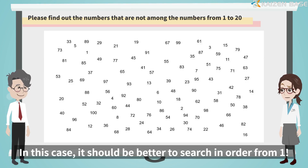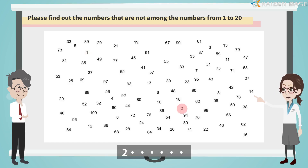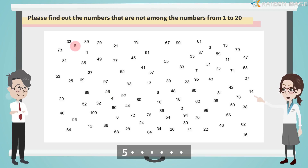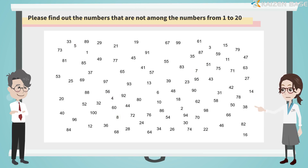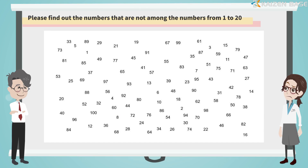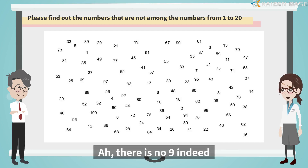In this case, it should be better to search in order from 1. 1, 2, 3 — there is no 4. Ah, there it is. 5, 6, 7, 8 — there is no 9. Maybe I just couldn't find it. There is no 9 indeed.